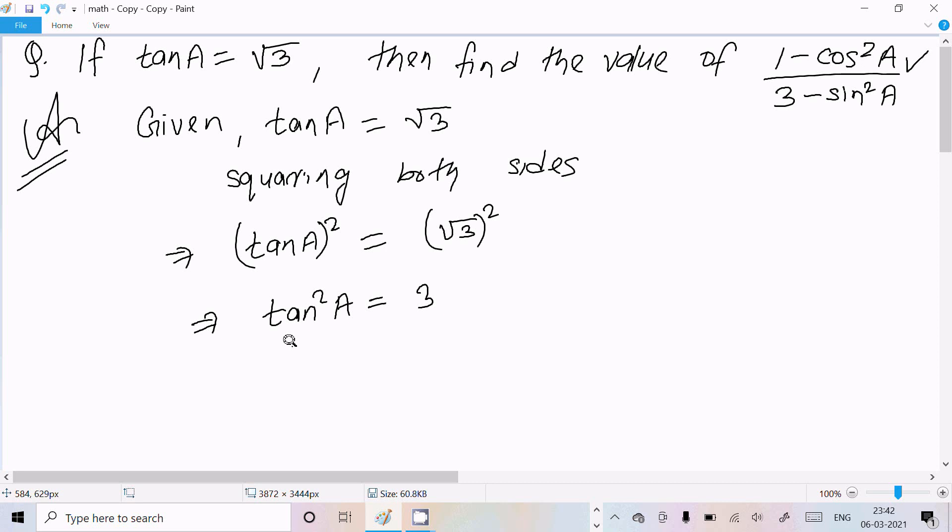We already know that tan²A = sin²A / cos²A. So we can write sin²A = 3cos²A. Here I got sin²A = 3cos²A.